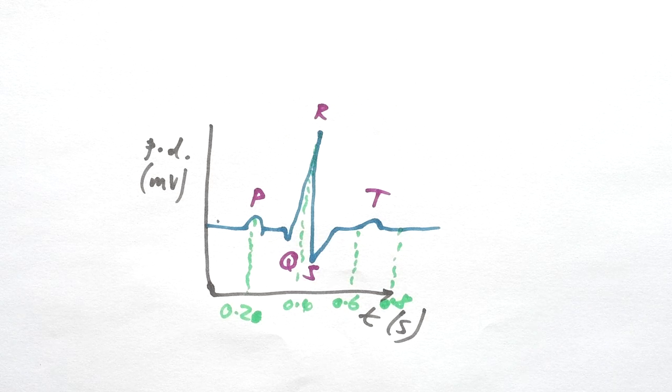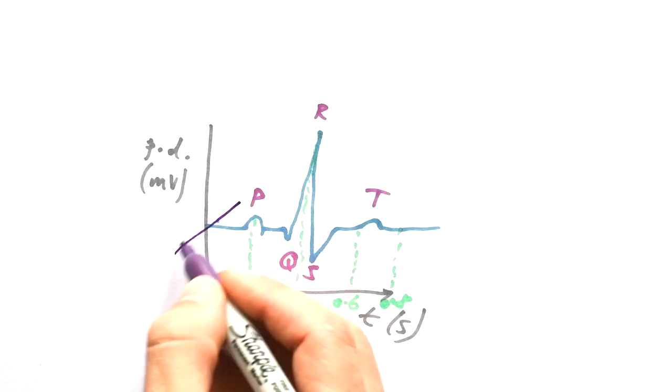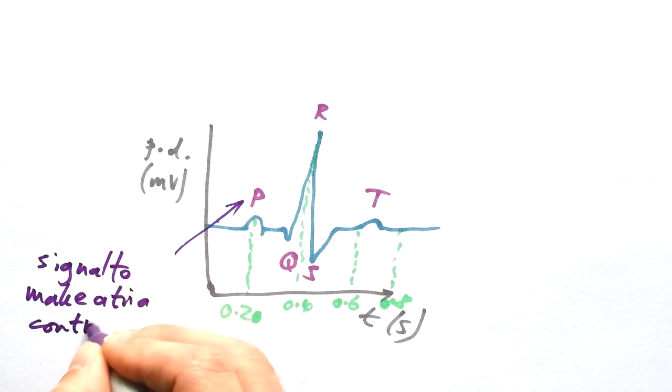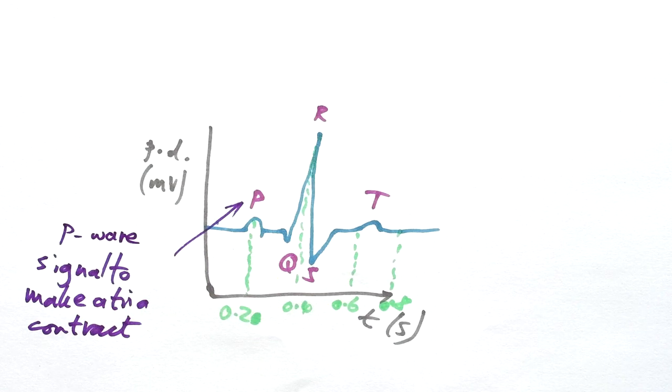So these are all the different electrical signals that make the heart contract. What do we say comes first? Well, we said that it is the signal to make the atria contract, and it makes sense that it's not a big signal because it doesn't need to be a big contraction in order to get blood just from the atria into the ventricles. We call that the P wave, not to be confused with seismic P waves.